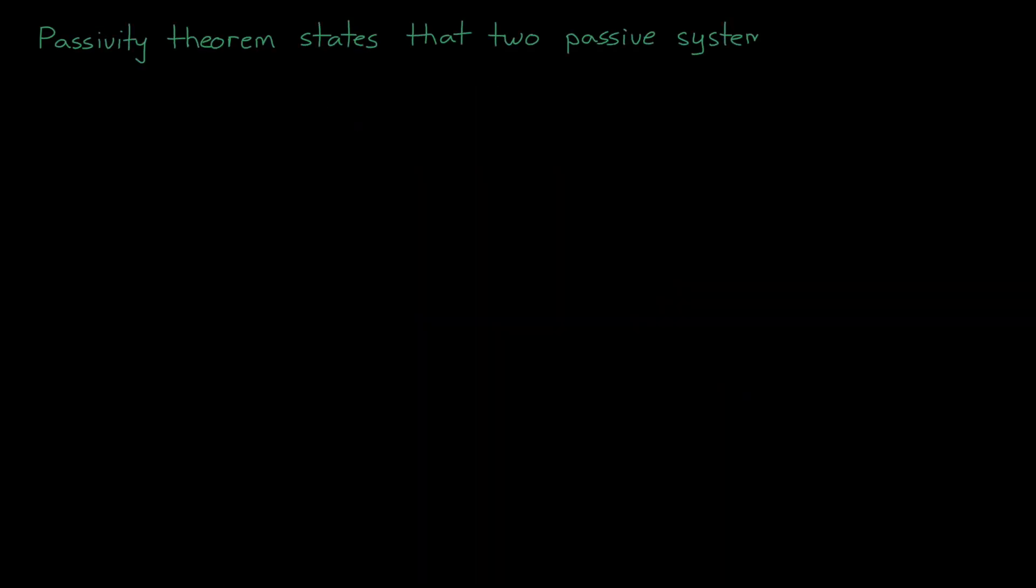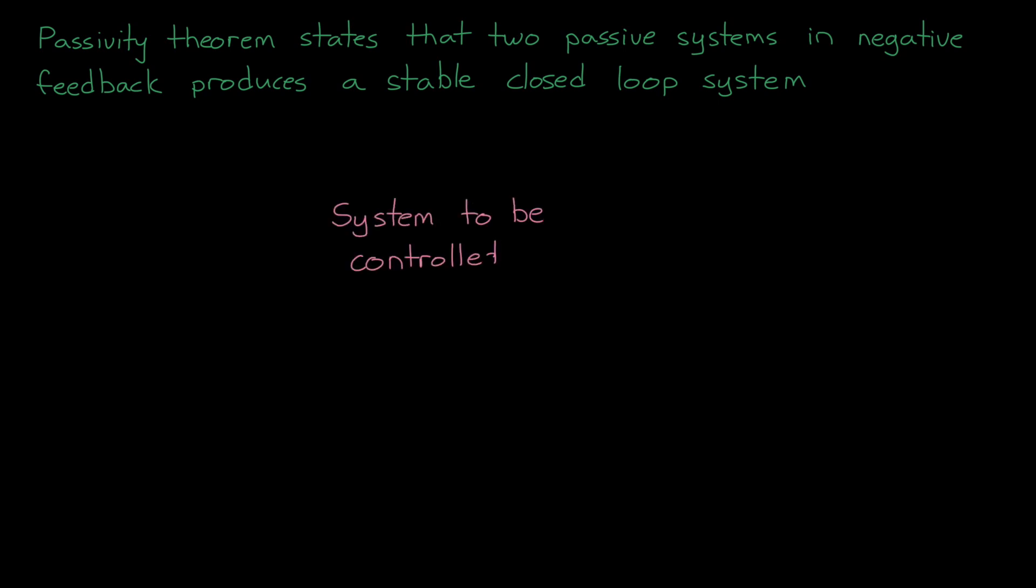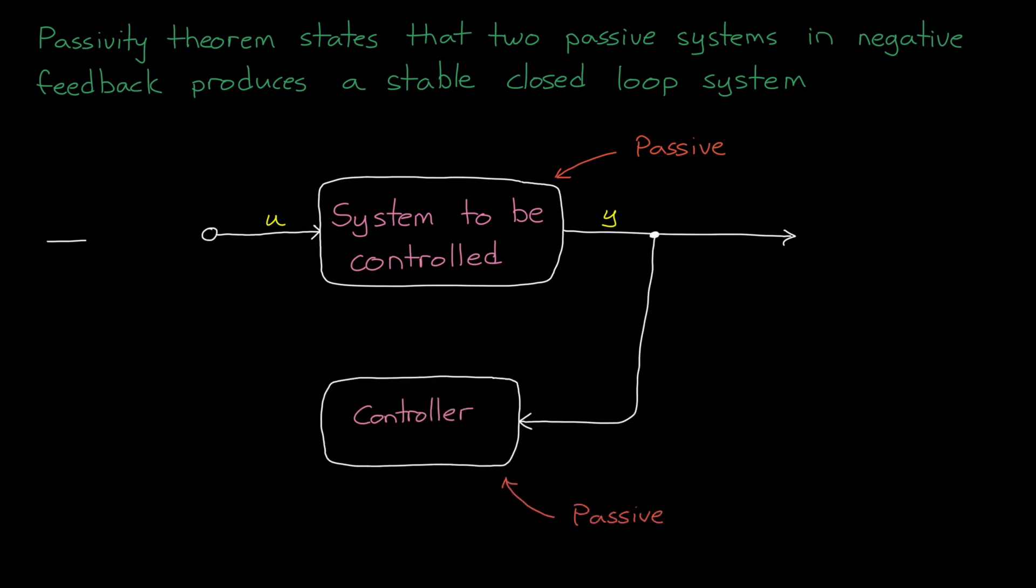For many real world systems, this can be generalized to the statement that an input output mapping is passive if on average increasing the output Y requires increasing the input U. That is, in order to get more out of the system, you have to put more into it. And so if you stop putting energy into the system, then you know that the output on average won't continue to increase. We're going to come back to this in just a second, but first I want to talk about the benefits of passive systems. The passivity theorem states that if we have two passive systems placed in negative feedback, then this will produce a stable closed loop system.